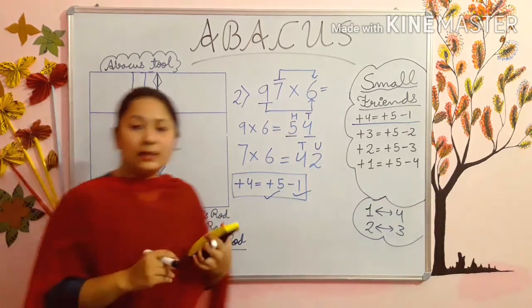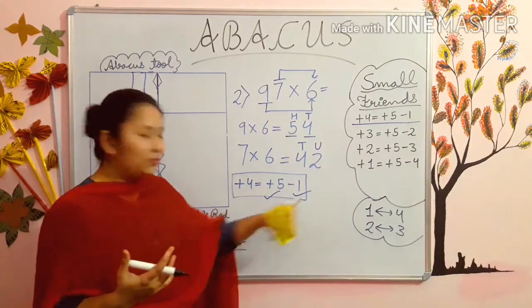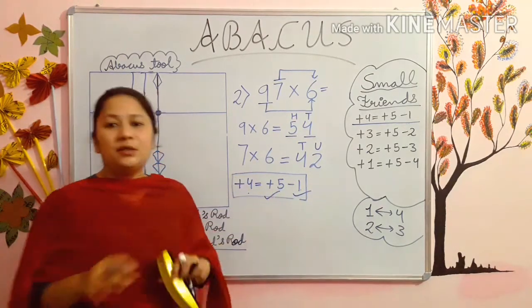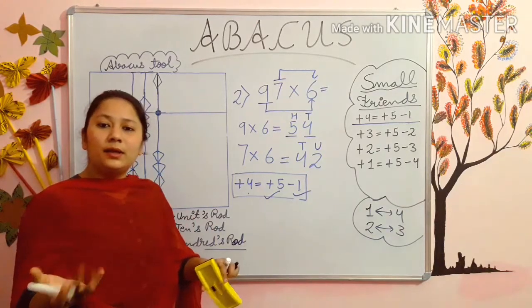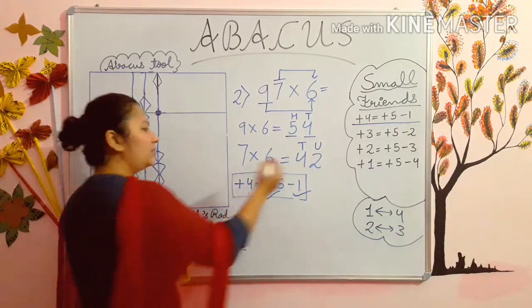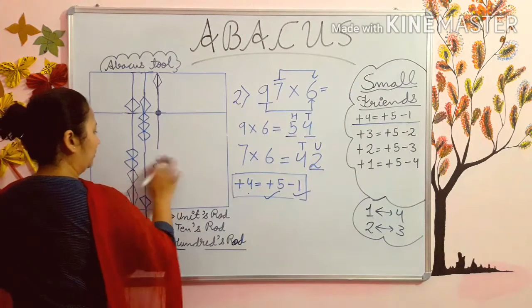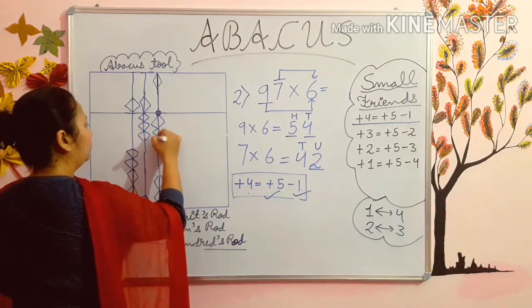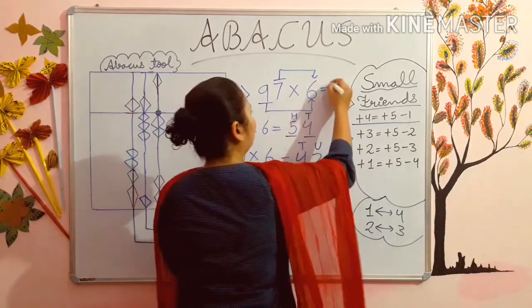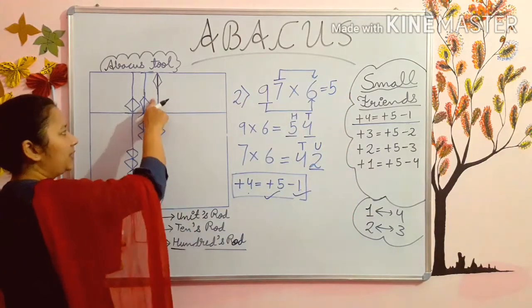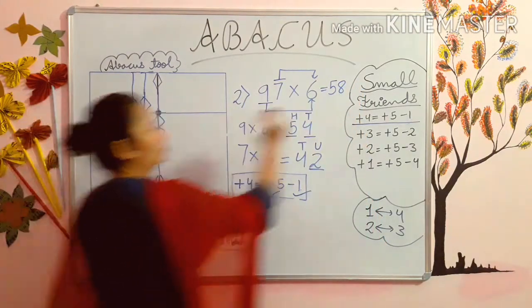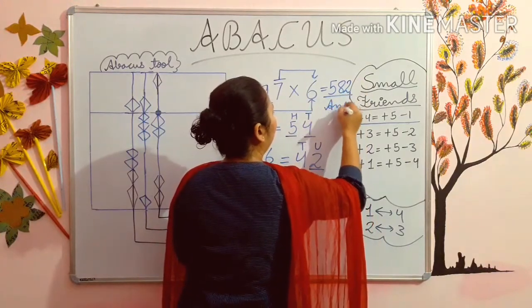Some students will think how 4 is added by using this formula. See students, 5 minus 1 is 4. If you are doing plus 5, then you are subtracting minus 1, it is giving you 4. So your 4 is added by using the formula. Next you have to add 2. In hundreds rod there is 5. In tens rod there is 5, 6, 7, 8. And in units rod there is 2. So answer is 582.